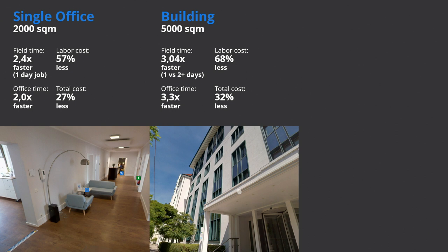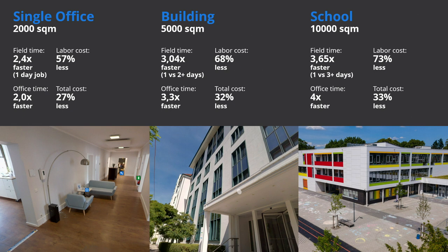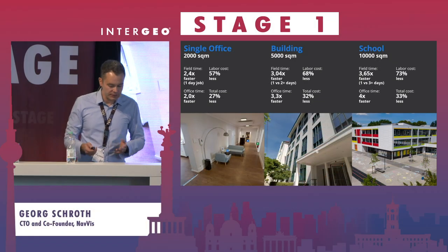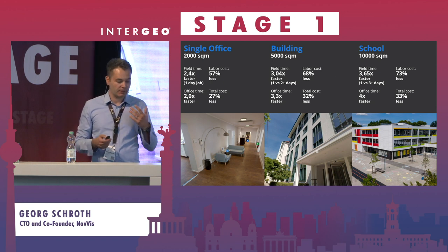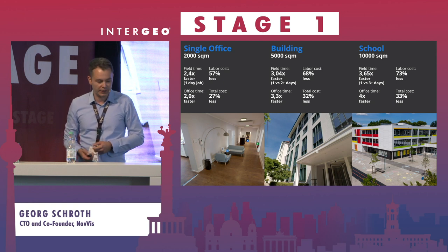For a building of 5,000 square meters: this is too much for one person with a TLS in one day, so you have to do things twice. Even assuming the project is very close by, you still see 68% labor cost reduction. And for a school at 10,000 square meters — all real scenarios — I'd argue you should always use control points with a total station at that scale. At 10,000 square meters: 3.65 times faster, 70% labor cost reduction, and above 30% total cost reduction. In times like these, can you really afford to not save 30% on your total costs?